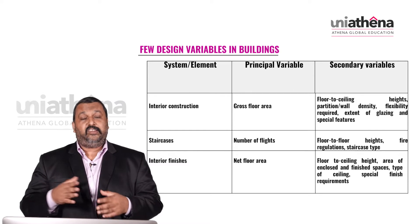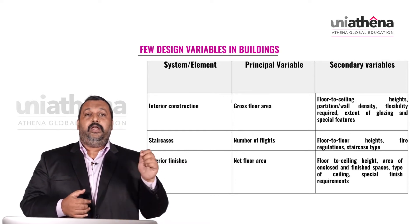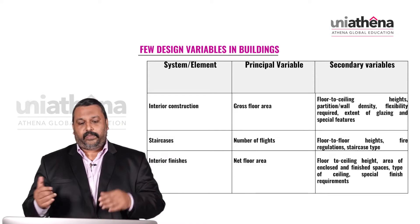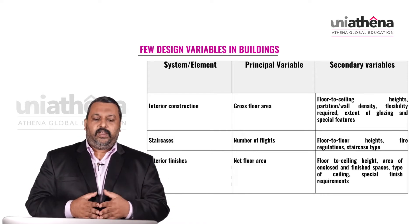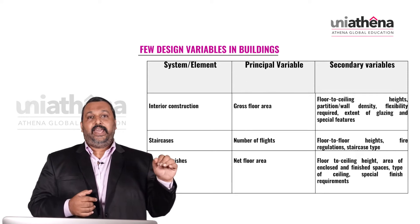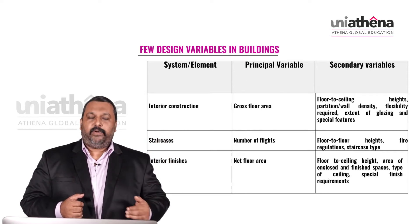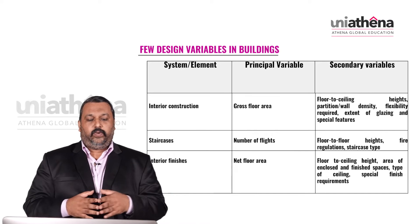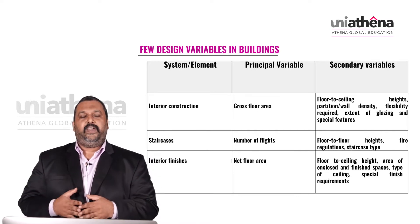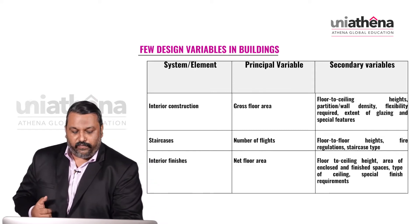For interior finishes as a system or element, the principal variable is going to be the net floor area (NFA). Secondary variables are floor-to-ceiling height, area of enclosed and finished spaces, type of ceiling, and special finish requirements.